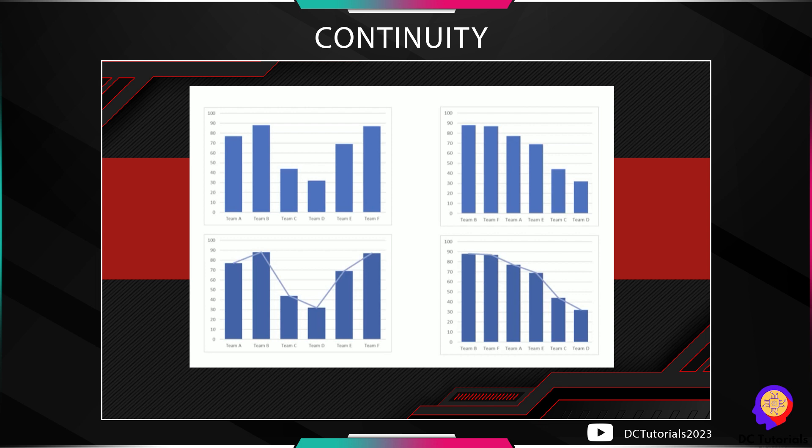The next principle is the principle of continuity. Looking at the left chart, the categories may appear as random data presented as-is, making it hard to draw insights. On the right side, data is arranged in a continuous manner and our attention follows the continuous line it produces. It is advisable to sort your data in ascending or descending order, though when there is a date and time component, the sorting should ideally be chronological.